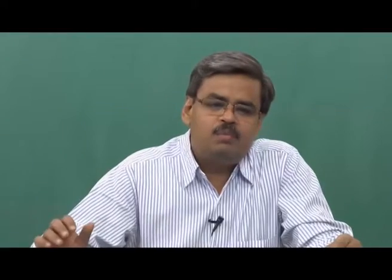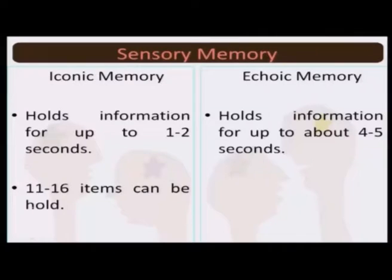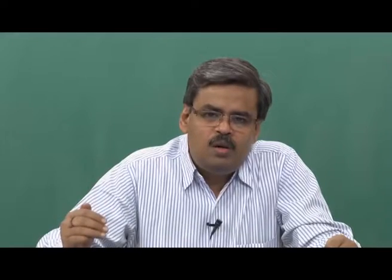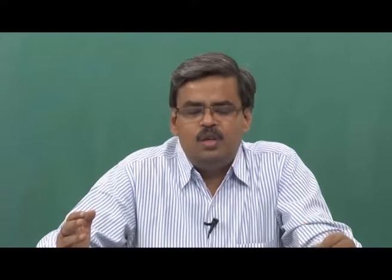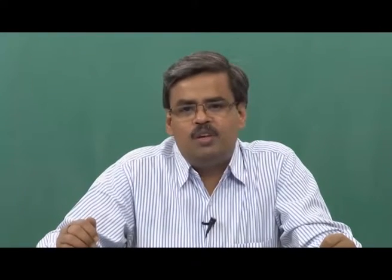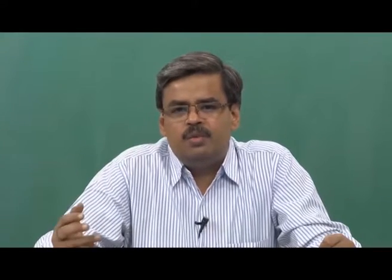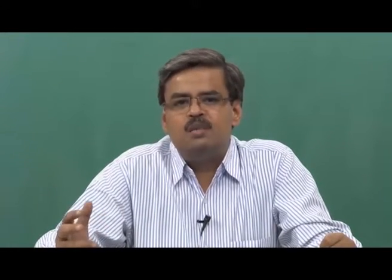Having discussed echoic and iconic memory, let us make a comparison between the two. Iconic memory in terms of duration is just 1 to 2 seconds, whereas echoic memory in terms of duration is 4 to 5 seconds. So the life of echoic memory is a little longer compared to iconic memory, but the advantage of iconic memory is that it can retain a relatively larger amount of information — approximately 11 to 16 items. With echoic retention, the moment you have two sounds of equal intensity, masking will take place.